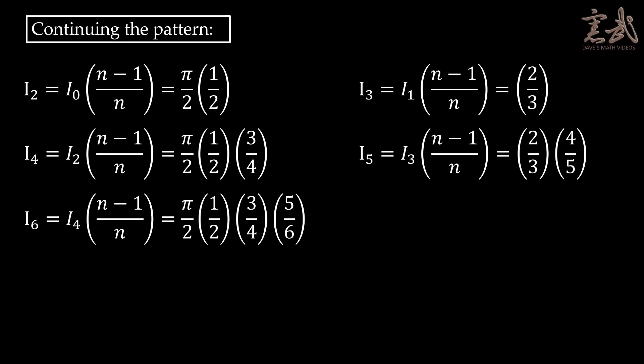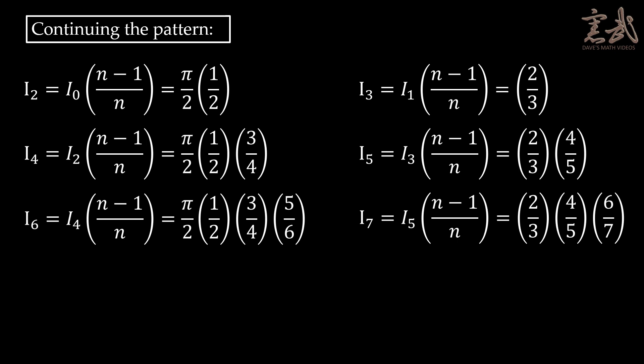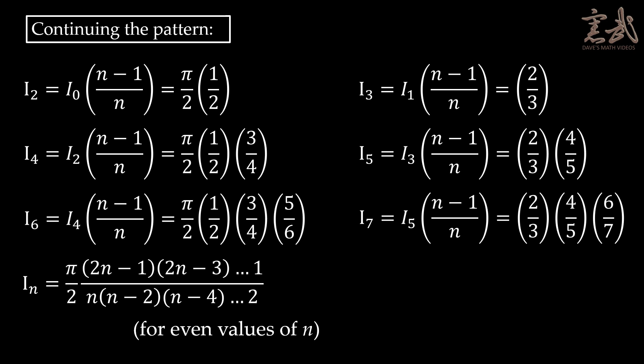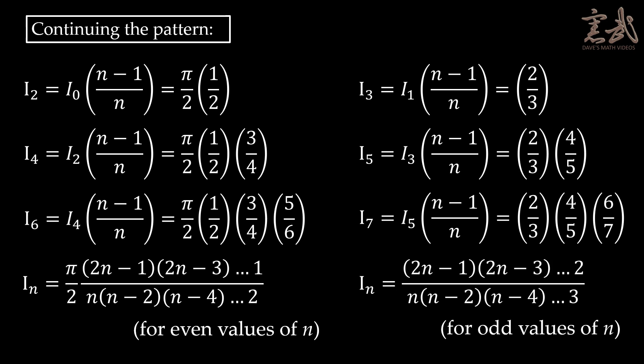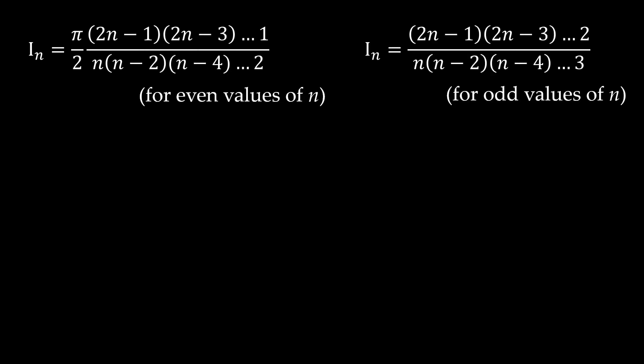Continuing the pattern, I₆ equals I₄ times (n−1)/n, multiplying the previous result by 5/6. For I₇, we multiply I₅ by 6/7. At this point, the pattern should be fairly easy to see. For even values of n, Iₙ equals π/2 times the product of all odd numbers up to 2n−1 over the product of all even numbers up to n. For odd values of n, we have the product of all even numbers up to 2n−1 over the product of all odd numbers from 3 to n. These results are displayed here.